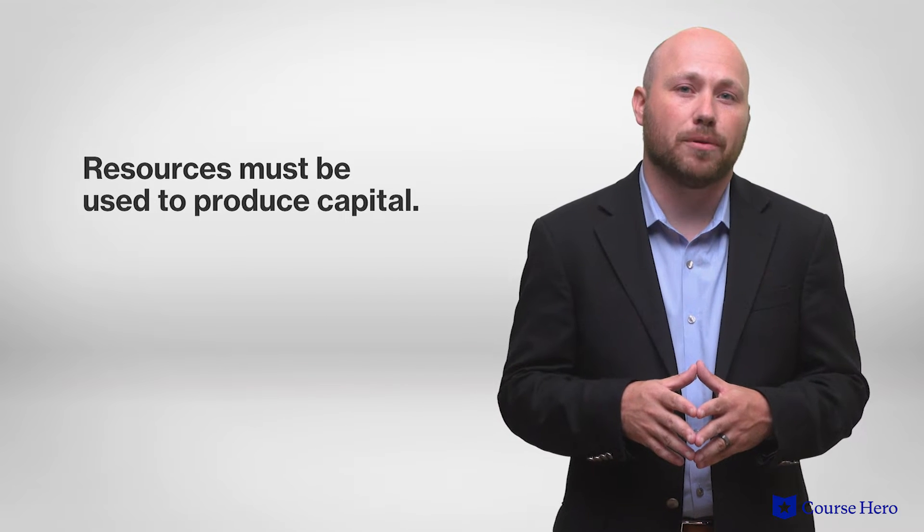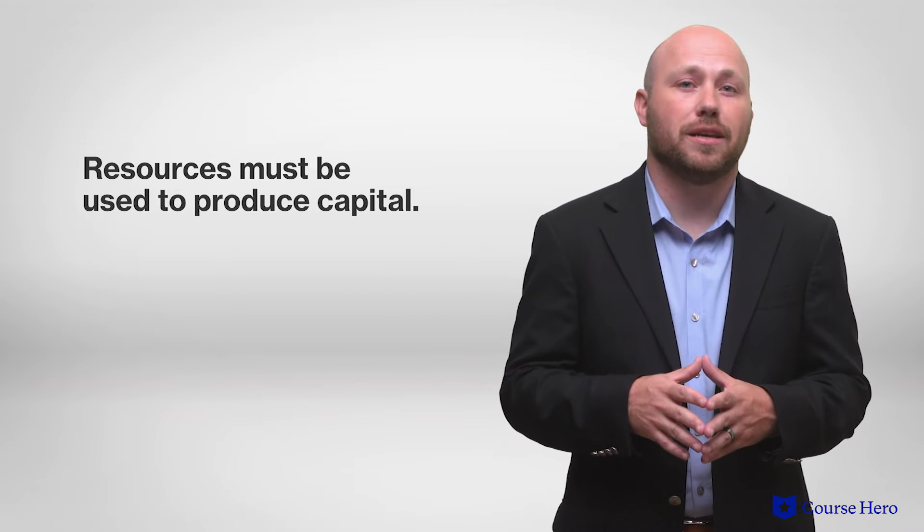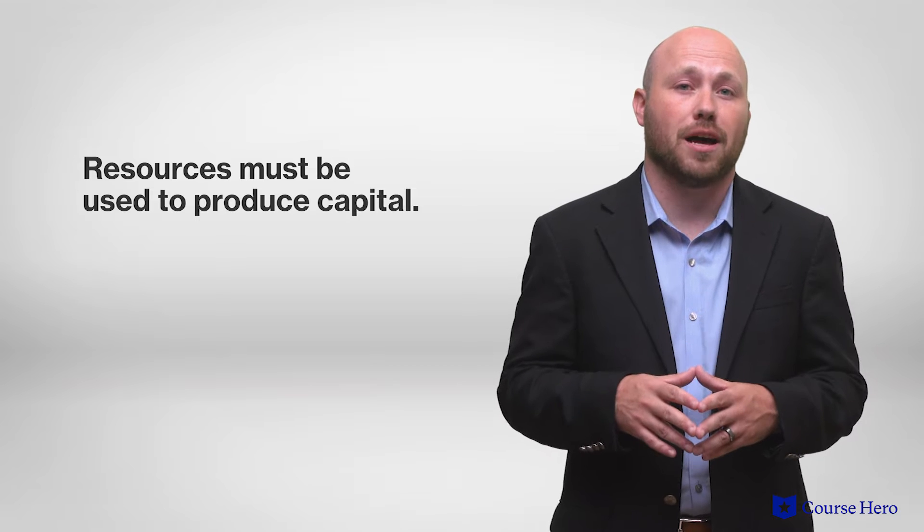Capital is developed through investment but in order to have capital goods a society must forgo the production of consumption goods such as food or clothing. Since people cannot stop using consumption goods altogether, people must instead save money over time to accumulate enough money for the large upfront capital cost. Resources must be used to produce capital, some of which may not immediately increase the productive capacity of an economy.